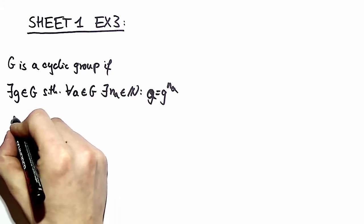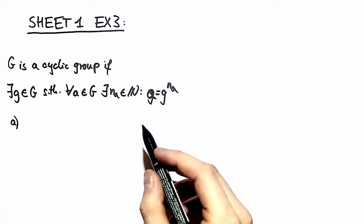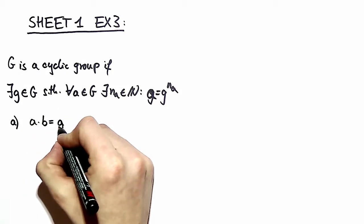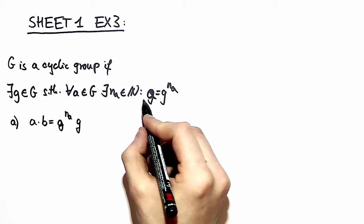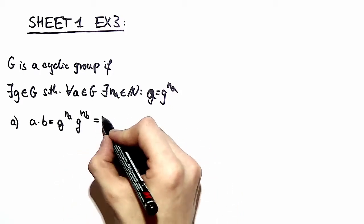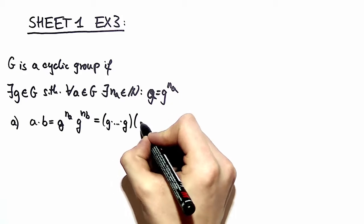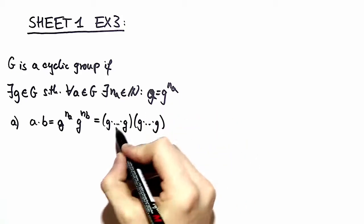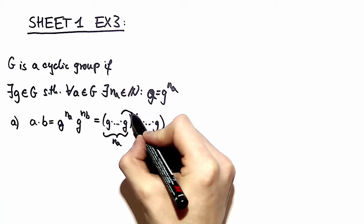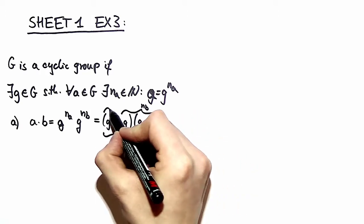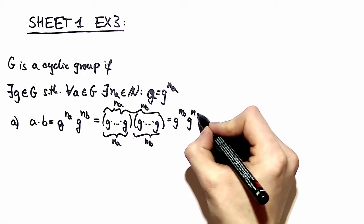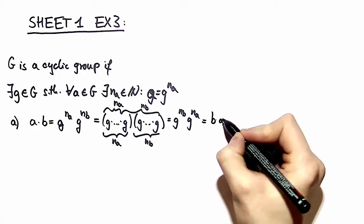This helps us to prove that a cyclic group is also an Abelian group. Namely, we have to show that any two elements A and B commute. We can write A and B as the definition says up here as the power of the element G. This can be simply understood as a repeated multiplication of our element G, namely N_A times and N_B times. Now we can regroup this multiplication because of the associativity and arrive that we have G to the power of N_B times G to the power of N_A, which is exactly B times A as expected.